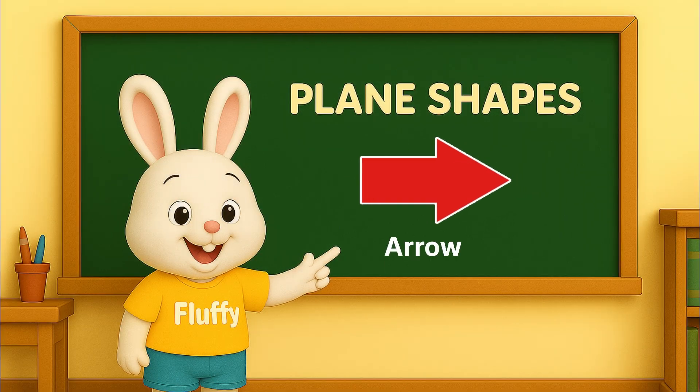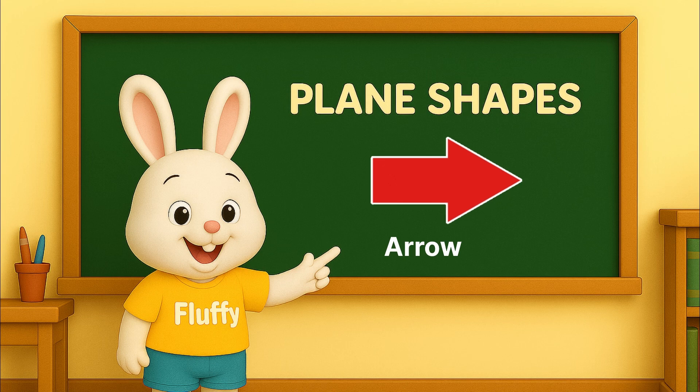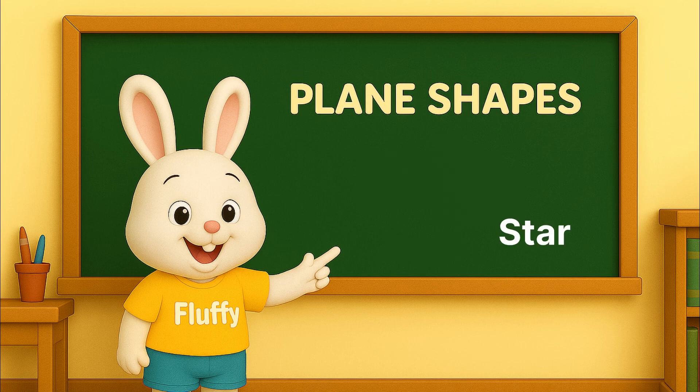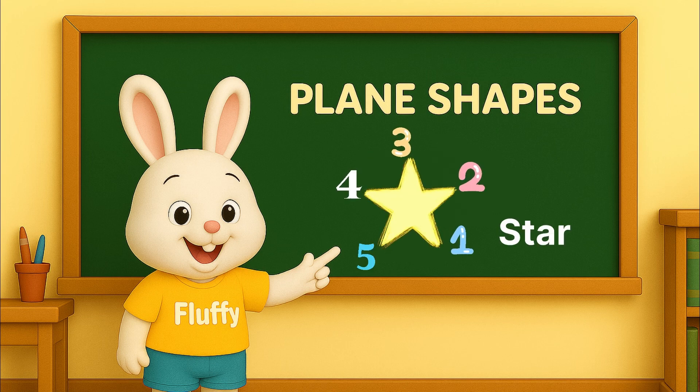Arrow. An arrow shape points in a direction. It helps us know where to go. Star. A star has five points. It shines bright in the sky.